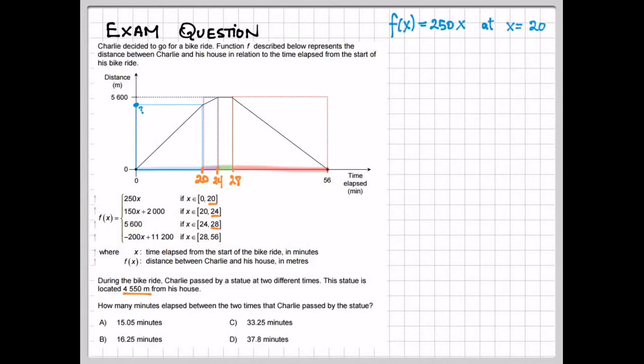So f of x equals 250x, and we want to know what is this equal to when x is equal to 20. Doing some algebra, we can work backwards to find that f of x is equal to 5,000 meters. So when I say that the statue is located 4,550 meters from the house, that's below this blue point. This is important to know, because when I draw a horizontal line going through 4,550 meters, we see that this horizontal line in orange crosses the blue part of the graph and the red part of the graph. Those two points are what we're interested in.